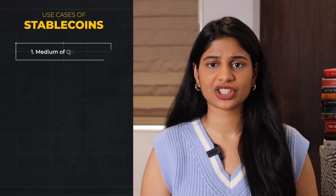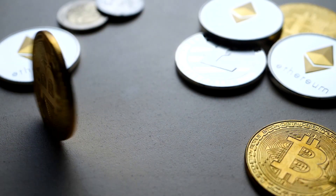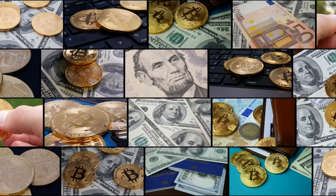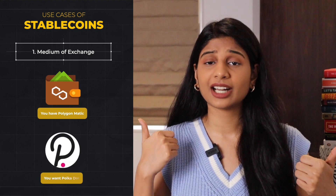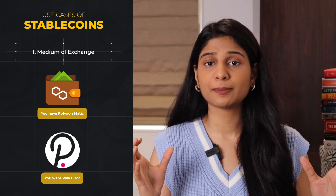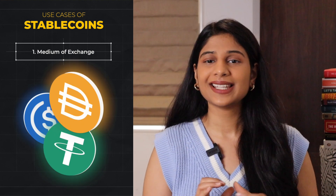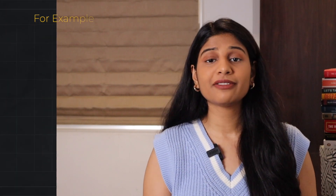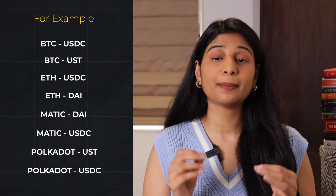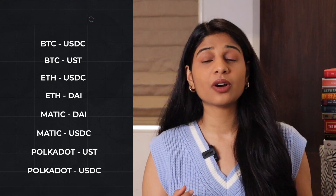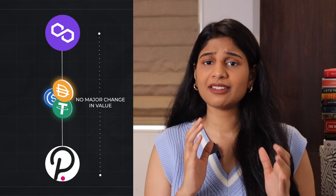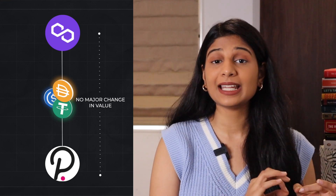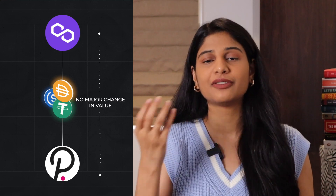The first use case is medium of exchange. There are thousands of cryptocurrencies available in the market and it is very difficult to find pairs for all of them to exchange. For example, if you have Polygon Matic in your wallet and you want to buy Polkadot token, you will find it very difficult to find this pair on any exchange. This is where stablecoins come in — because the value of stablecoins is stable and they are widely available, you can exchange your Matic for a stablecoin and then convert that stablecoin into Polkadot, with no major change in the asset's value during the transaction.